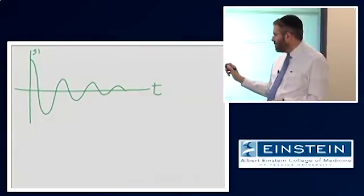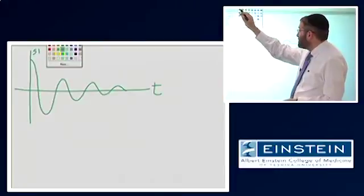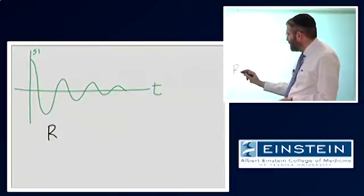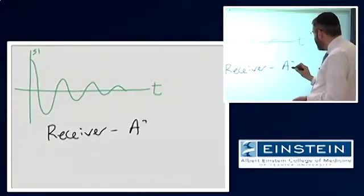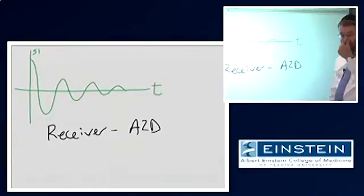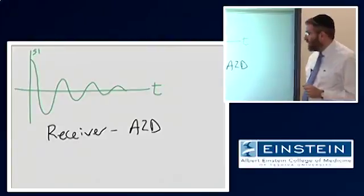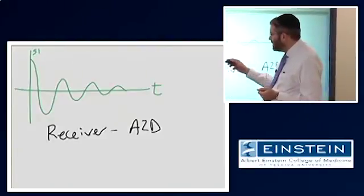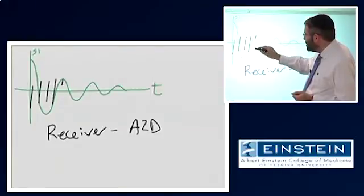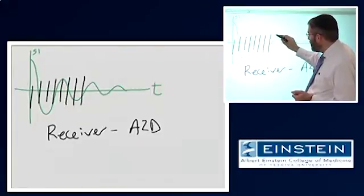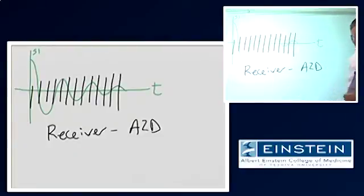So there is another piece of the MR system, which is called the receiver, or also known as the A to D, or analog to digital converter. All that is, is complicated, but for our purposes, that is essentially just a piece of hardware which takes this signal and essentially chops it up into a series of discrete measurements.